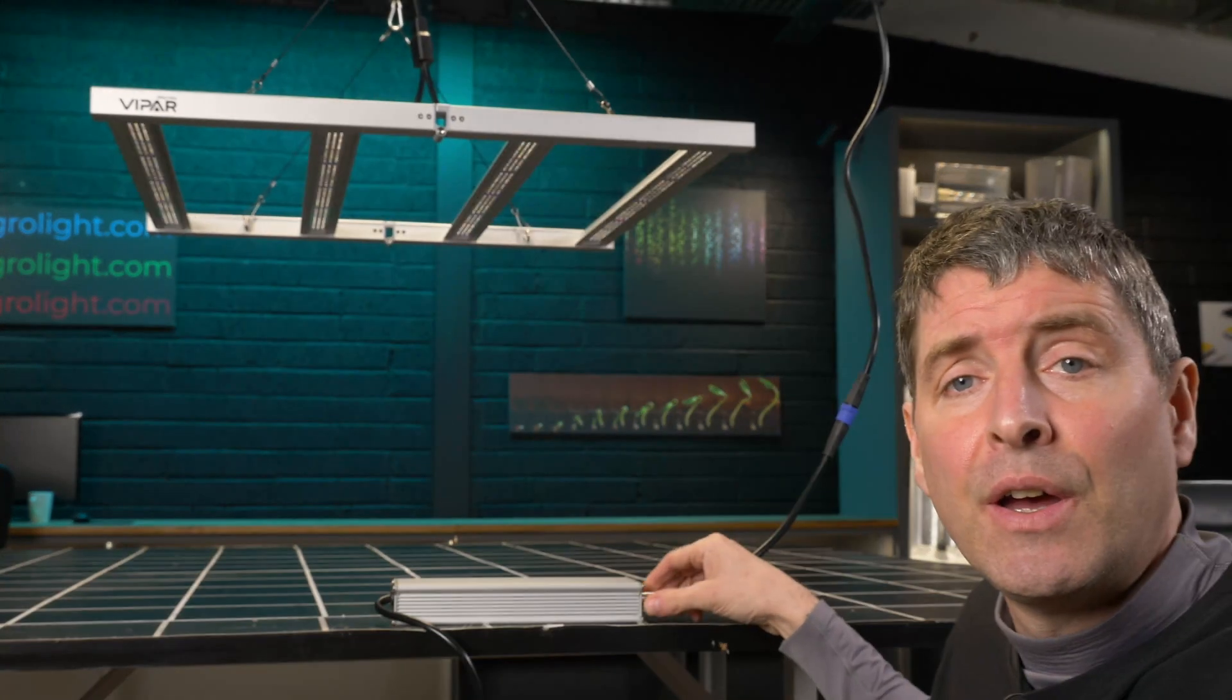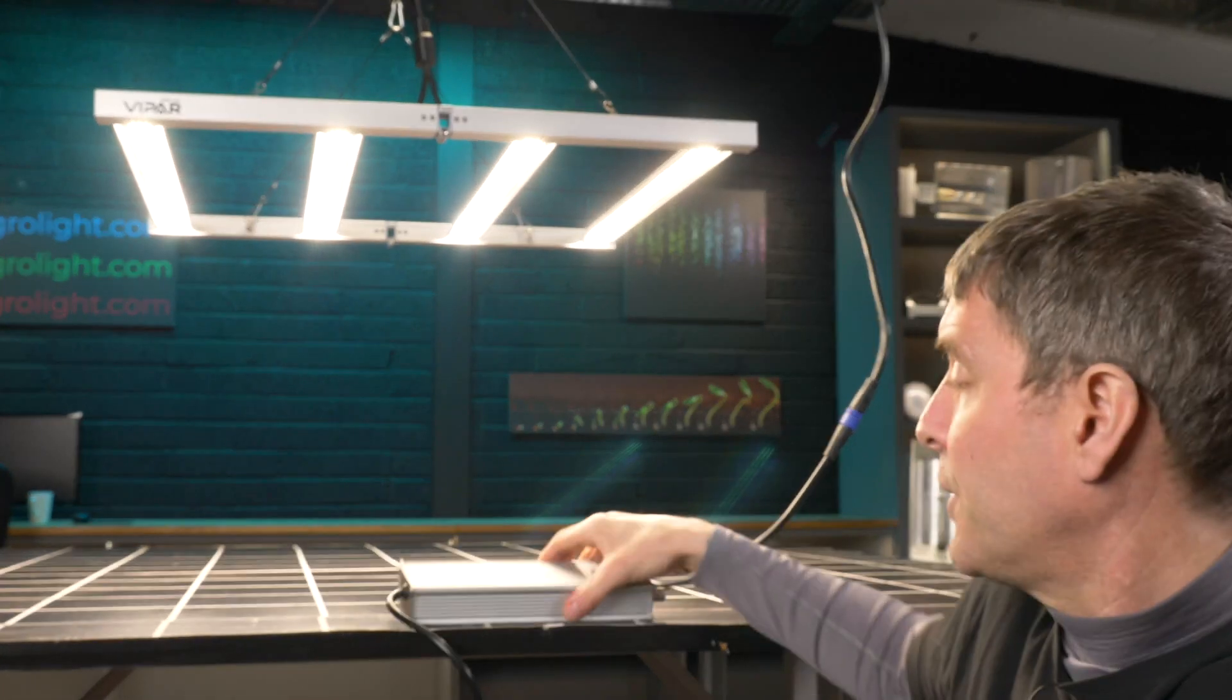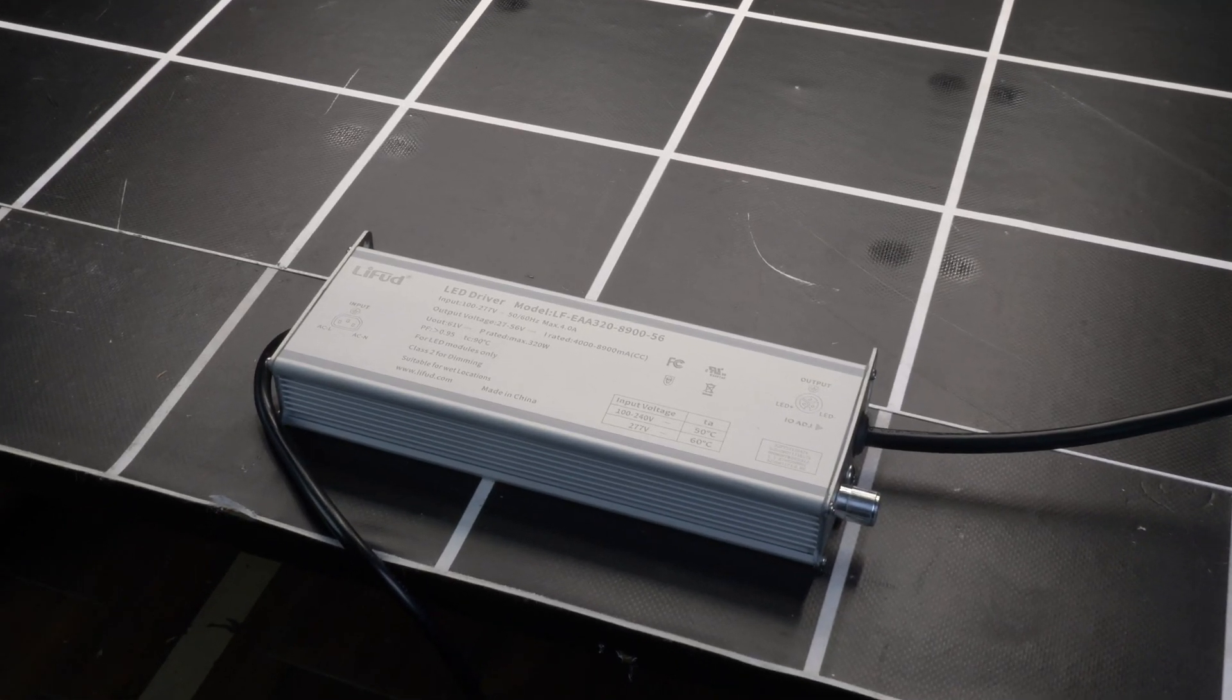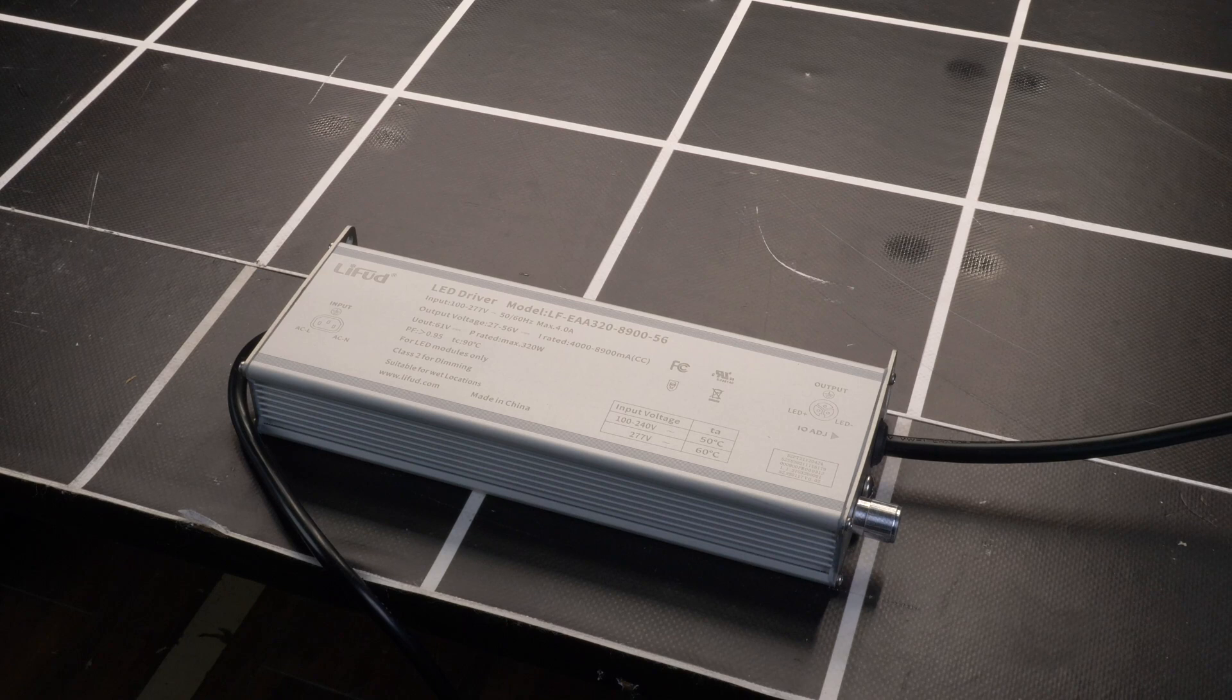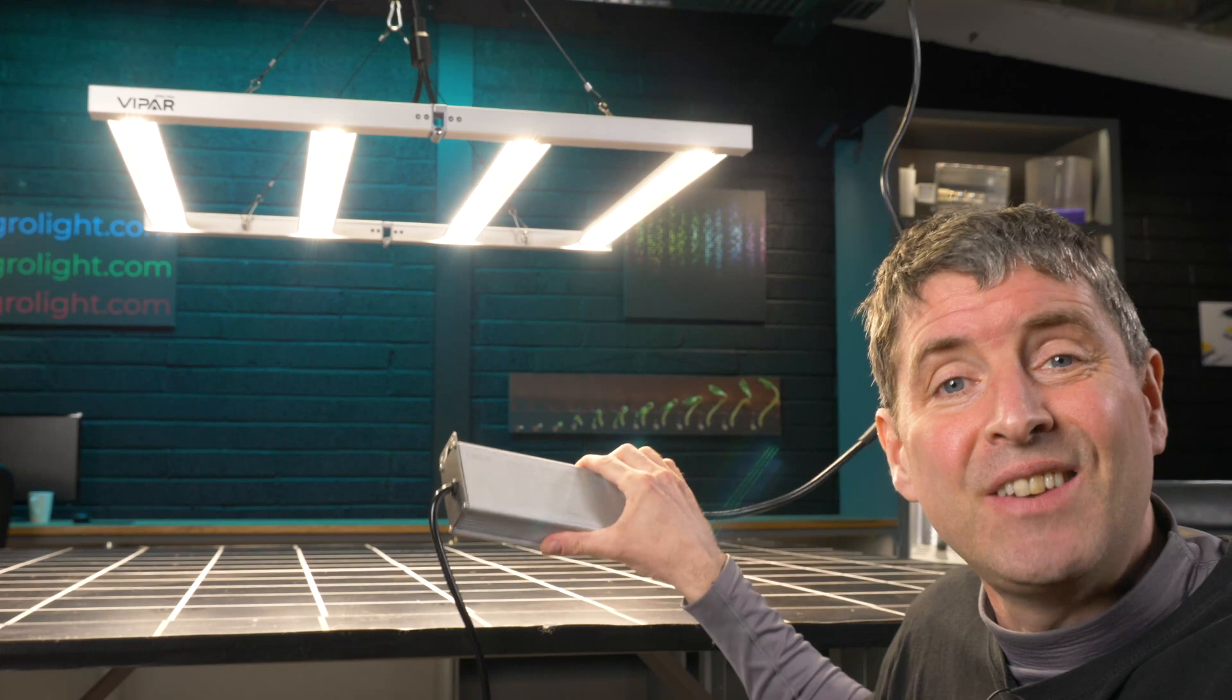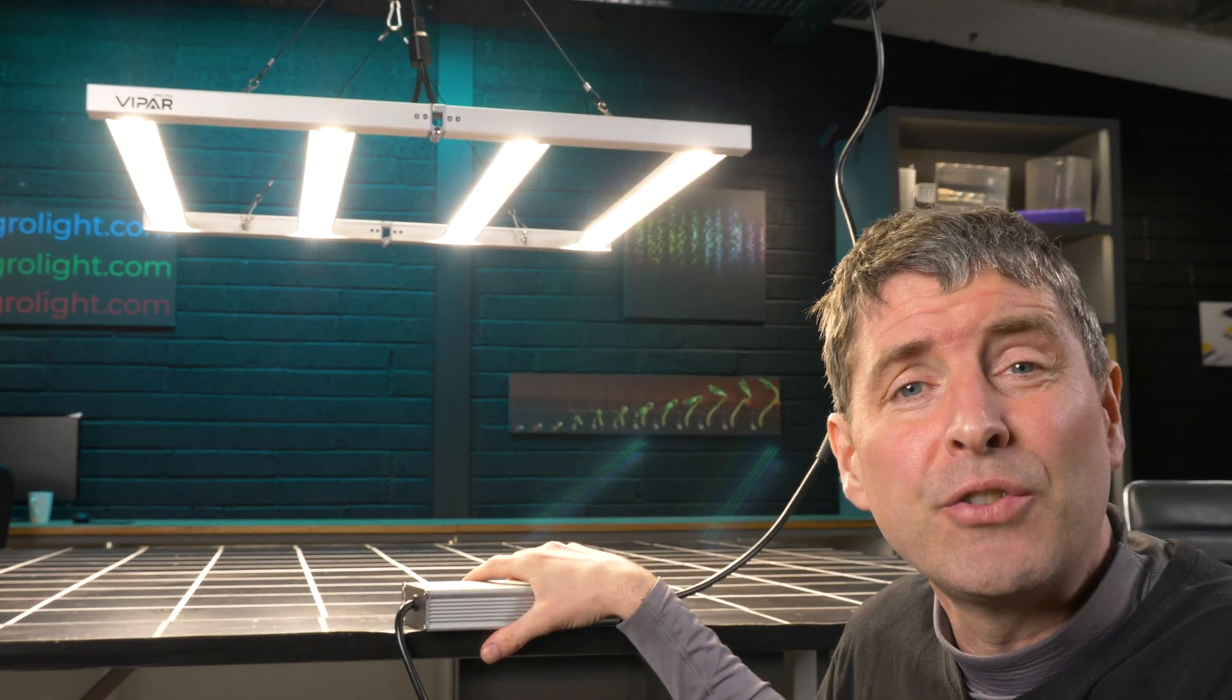You've got dimming on board and on-off on board on the driver. And what this does is it keeps the hanging weight of the fixture down and also keeps the heat that the driver generates outside of the grow area or the grow tent.